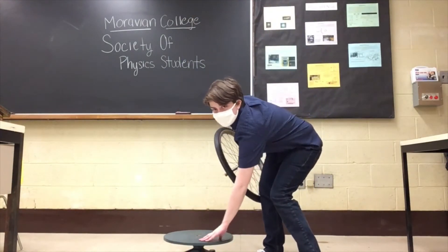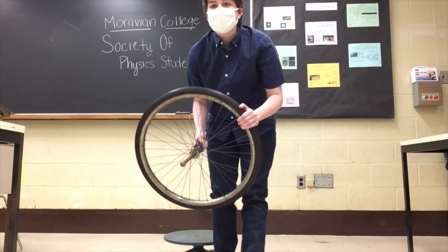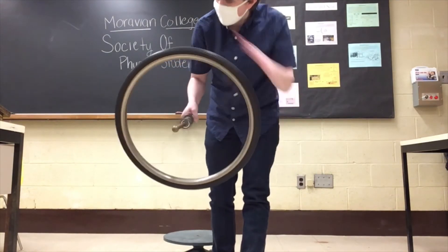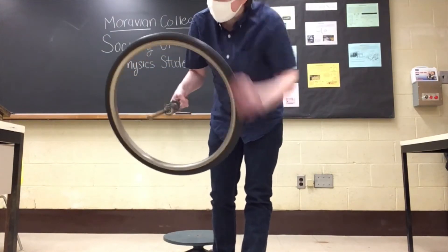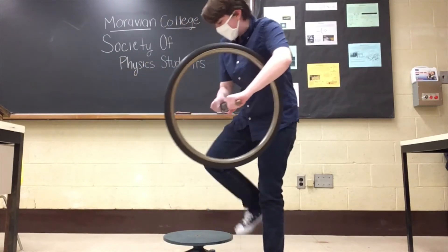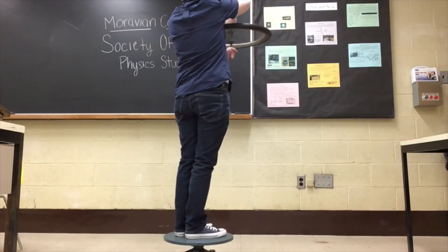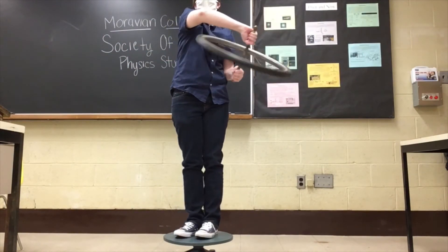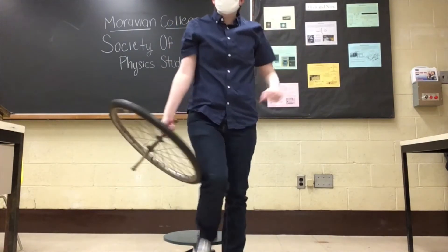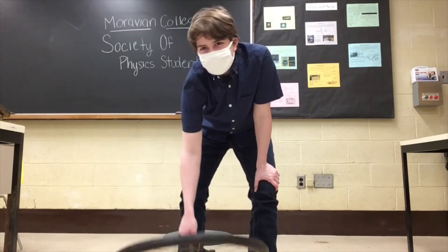So behind me here I have this nice little rotating table. What I'm going to do is get this bike tire spinning as fast as I can — faster, faster, faster. I want to get this going as fast as I can, get as much energy and momentum as possible, get up on my little table, and woo! All this energy is now transferring to me because it needs somewhere to go. All of that movement from one bike tire and a little bit of energy.